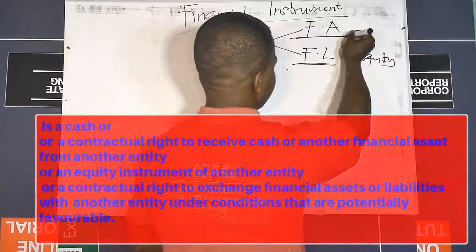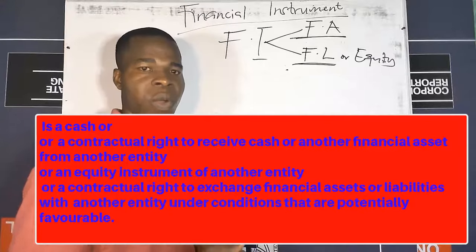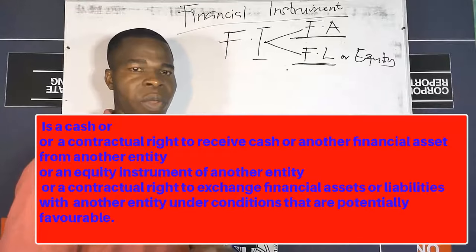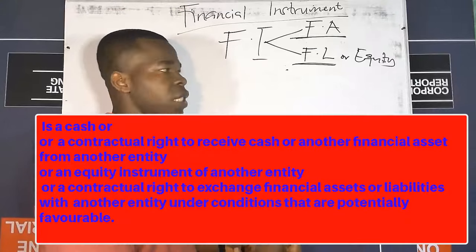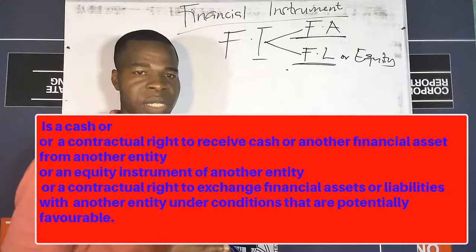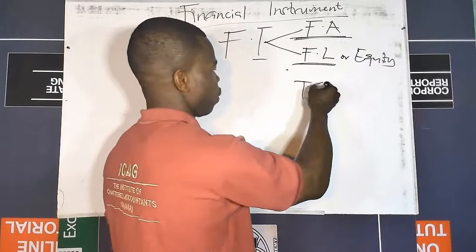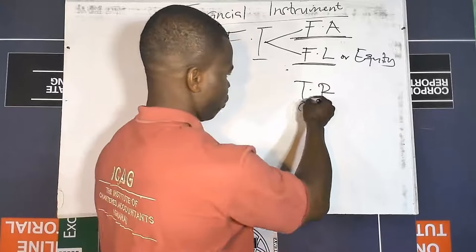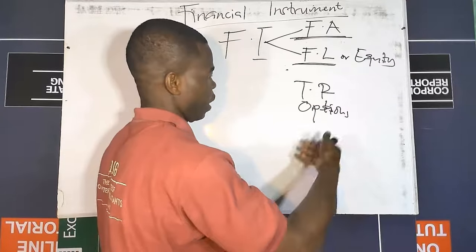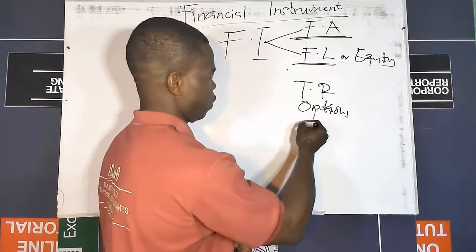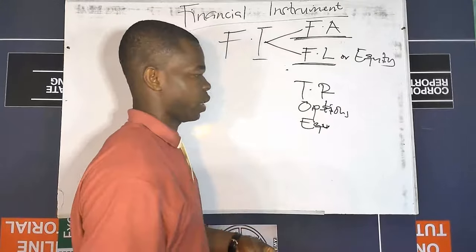Having understood what a financial instrument is, let's look at what a financial asset is. A financial asset is cash, or a contractual right to receive cash or another financial asset from another entity, or an equity instrument in another entity, or to exchange financial assets or financial liabilities under conditions that are potentially favorable. Examples of financial assets include trade receivables, options, and equity shares — that is, investment in ordinary shares.